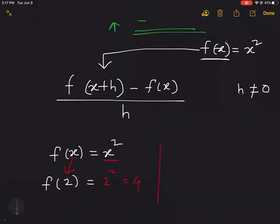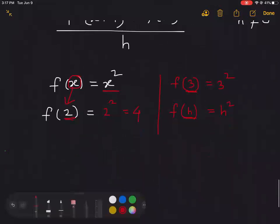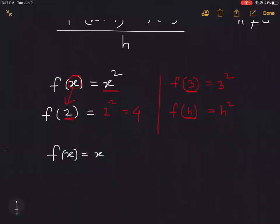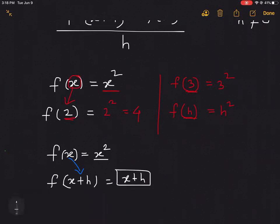Similarly, f(h) = h². That means wherever you have x, if you're replacing it by something else, you just replace all x's by that value. So for f(x) = x², f(x+h) would be (x+h)² — we just replace x with x+h, and then square it.